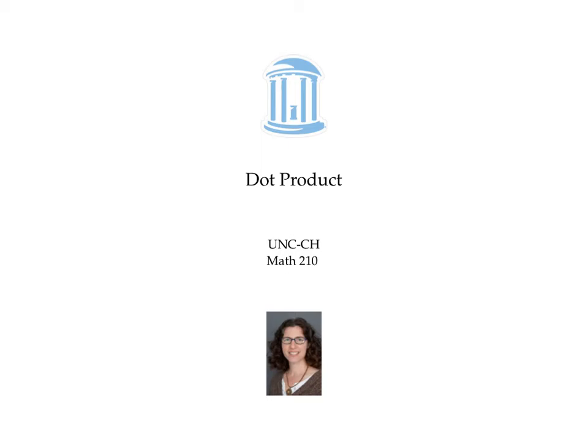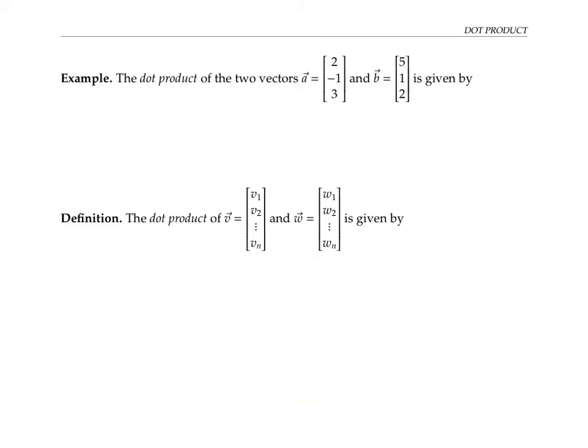This video introduces the dot product of vectors. Suppose I have these two vectors, a and b, each with three components. I find the dot product, which is written a dot b. I usually write it with a little circle to make the dot more obvious.